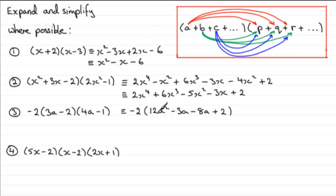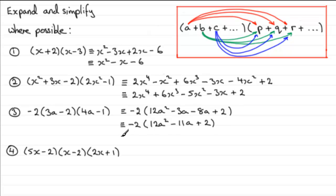Now I'll simplify the bracket result while still holding back the outer minus 2. Inside we've got 12A squared, and the A terms: minus 3A minus 8A which totals minus 11A, plus the constant 2. Now expanding: minus 2 times 12A squared is minus 24A squared; minus 2 times minus 11A is plus 22A; minus 2 times plus 2 is minus 4.